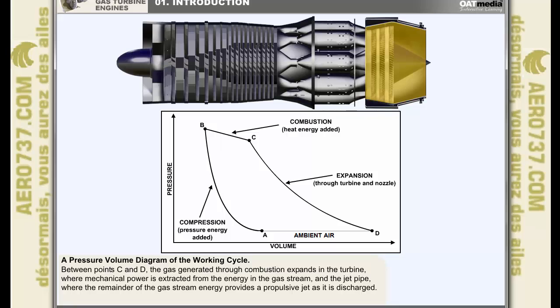Between points C and D, the gas generated through combustion expands in the turbine, where mechanical power is extracted from the energy in the gas stream, and the jet pipe, where the remainder of the gas stream energy provides a propulsive jet as it's discharged. In theory, the gas stream pressure attains a value equal to atmospheric pressure before being ejected.